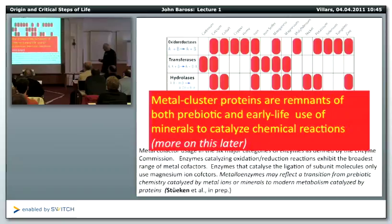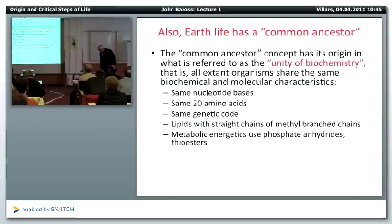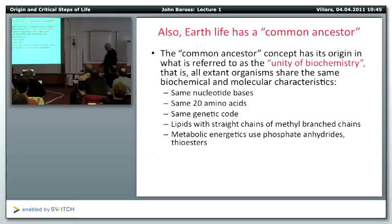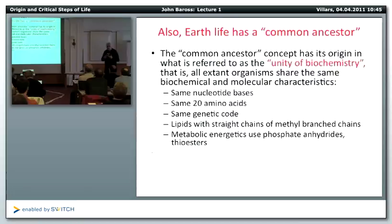Life has a common ancestor — the unity of biochemistry — meaning all extant organisms share the same biochemical and molecular characteristics: same nucleotide bases, same 20-plus amino acids, same genetic code, same membrane lipids with straight chains of methyl branched, same metabolic energetics using either phosphate or thioesters. This is the concept of the common ancestor, and what I want to do later is focus on what the last common ancestral pool of genes looks like, what environment it was in, and why we ended up with this unity of biochemistry.